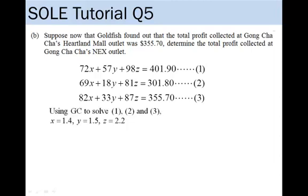Using our GC, we find that x equals 1.4, y equals 1.5 and z equals 2.2.